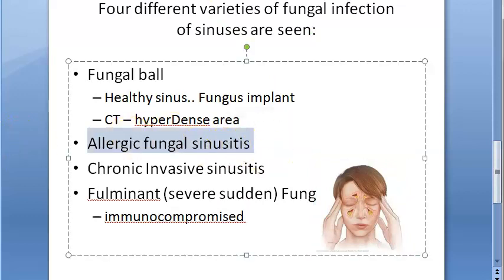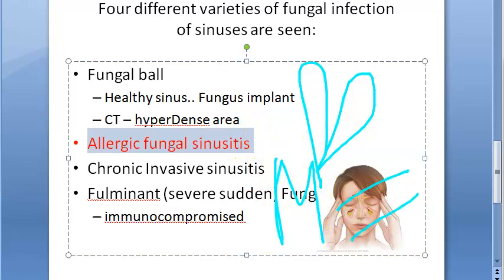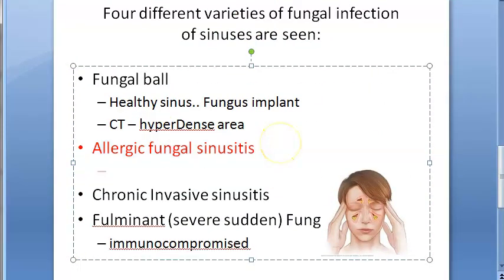Allergic fungal sinusitis is an allergic reaction to fungus. The patient presents with sinonasal polyposis and mucin. The mucin contains eosinophils, Charcot-Leyden crystals, and fungal hyphae. On CT you will see a hyperdense area, mucosal thickening, expansion of the sinus, and bone erosion due to pressure — but there is no fungal invasion of the sinus mucosa.